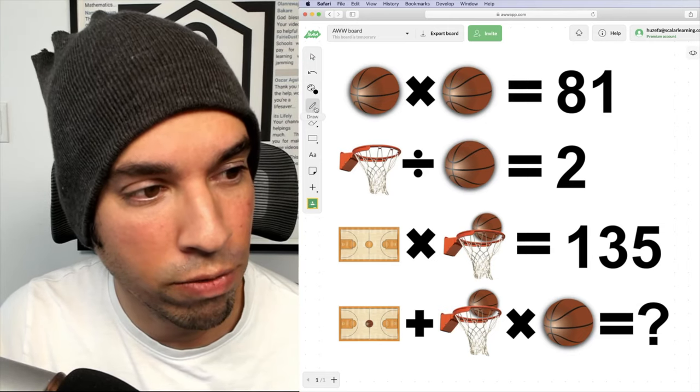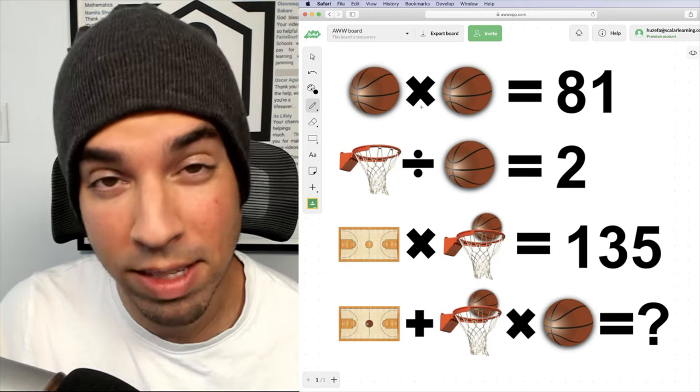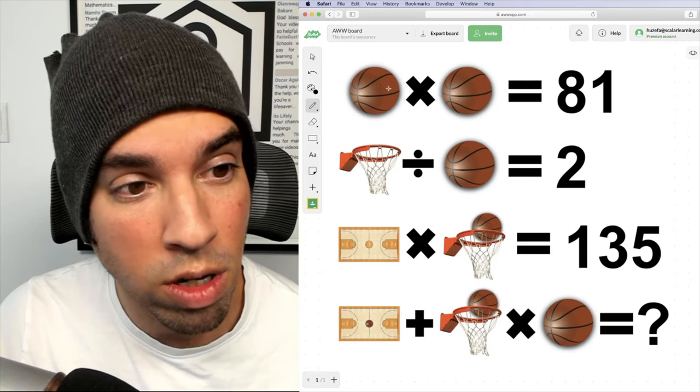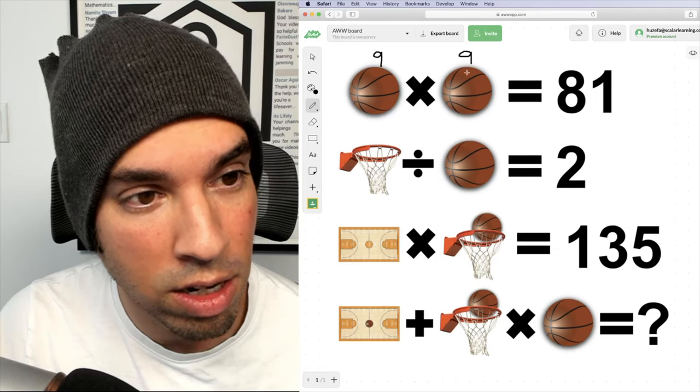All right, so let's get it going. First we have a ball times a ball. These two values are going to be the same, right? Because it's the same object. So what number times itself is 81? That is nine. So these guys are nine up top.